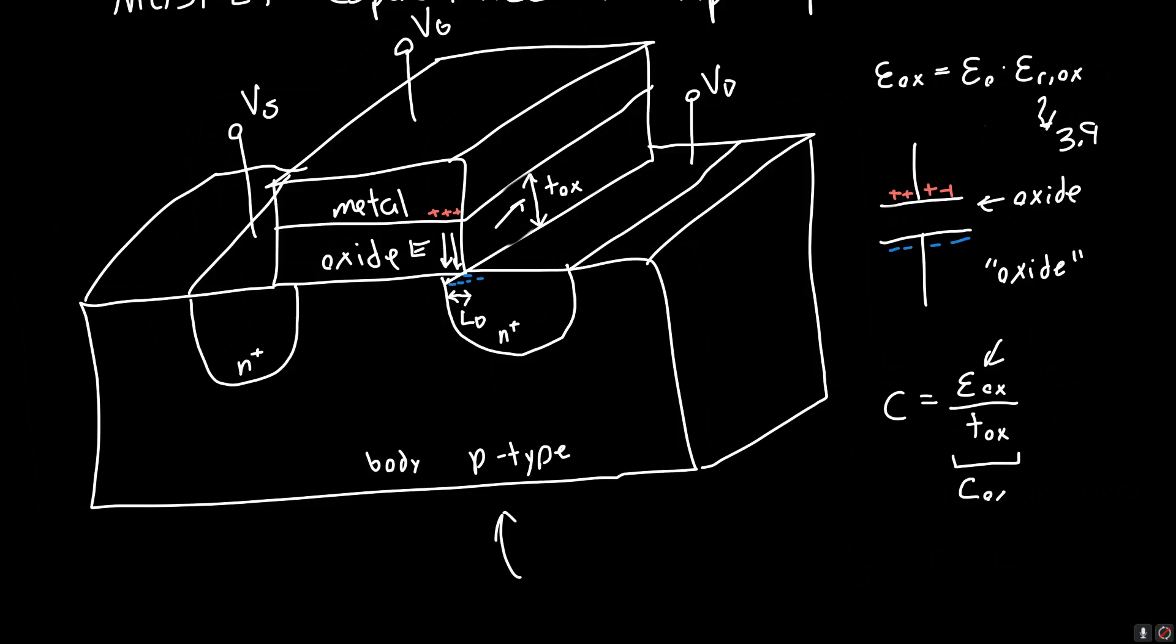And so we typically lump this into a single parameter called COX, which is implicitly the capacitance per unit area. So capacitance per unit area of the gate, or of the oxide capacitor. And then we need to multiply all of this by the area. Or in this case, since we've got an LD here, part of the area of the capacitor is this length, and then the other part of the area is the width. So the width of the capacitor, or the width of the MOSFET. And we get to control this. We don't get to control this LD.